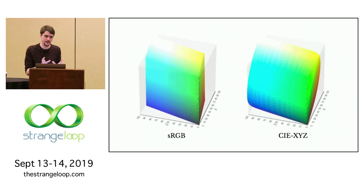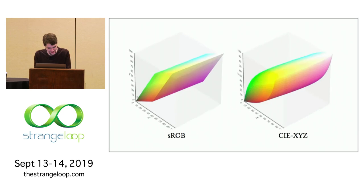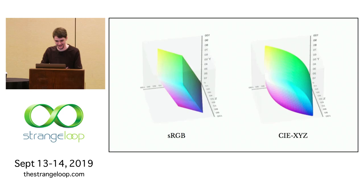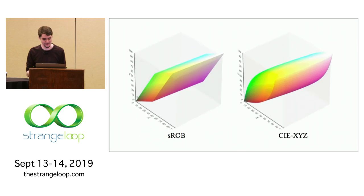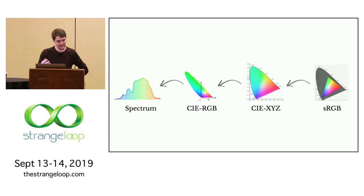We can also show sRGB in 3D against CIE XYZ. You can see it's not a triangle but really a three-dimensional prism shape — a lot thinner, missing a lot of these more interesting colors. An interesting thing to note is that you're looking at this right now in sRGB — this display uses sRGB. So this entire presentation has been compressed, projected down, and there are all sorts of transformations you can use to project it. Those greens that seem to be missing — well, you can't see them anyway.